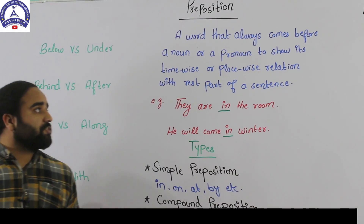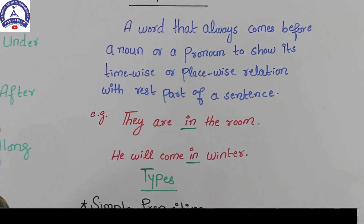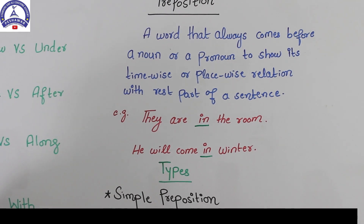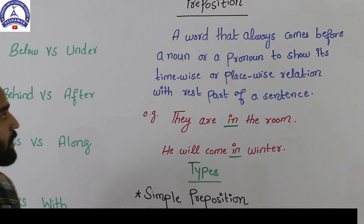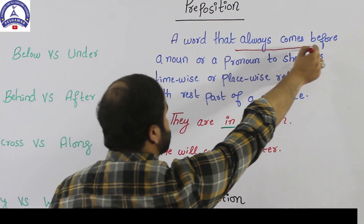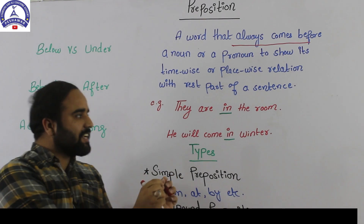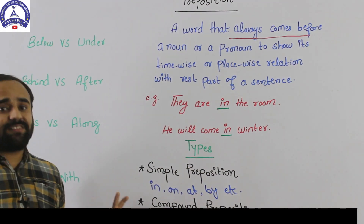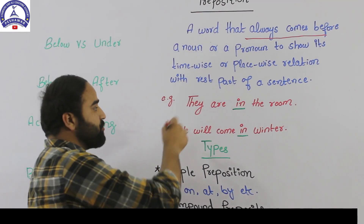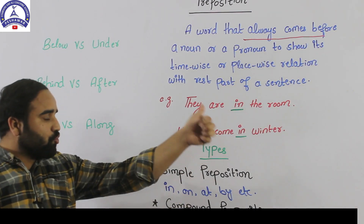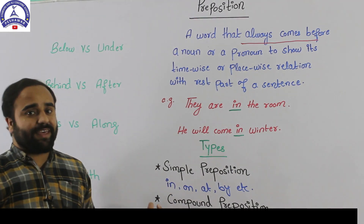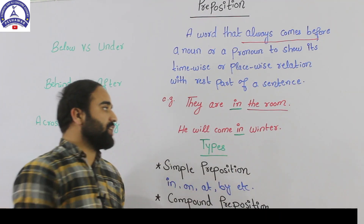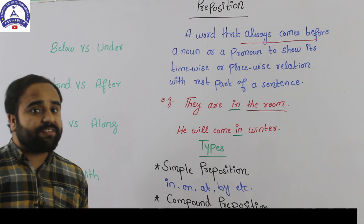If we define preposition, it's a word that always comes before a noun or a pronoun to show its time-wise or place-wise relation with the rest part of a sentence. Always comes before a noun or pronoun means that if there is no noun or pronoun after it, it is not a preposition. If I say 'they are in' and stop, the word 'in' is not a preposition there, it's an adverb. We need to have a noun or pronoun after it to call it a preposition, otherwise it is an adverb.